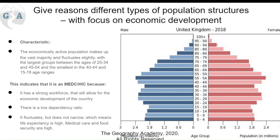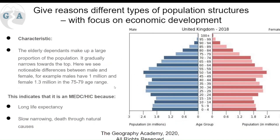We also see high life expectancy, as so many people live into their 70s and 80s, and that's expected to grow further. Looking at the elderly dependents section, the long life expectancy is shown by the slowly narrowing top of the pyramid, indicating death through natural causes.